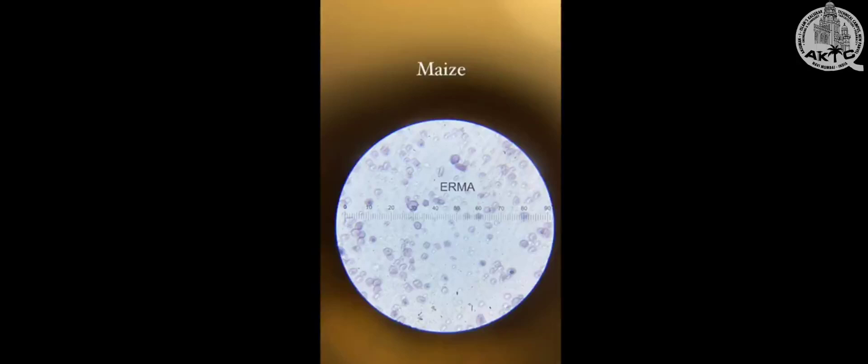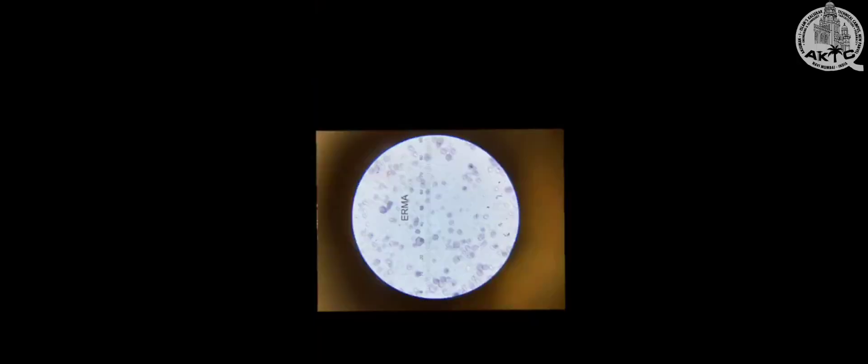As you can see the grain on 16 on the scale, we have to measure the breadth by counting the lines. So here we got 4 as breadth. Now we have to rotate the eyepiece vertically and count the lines on the same grain as length.